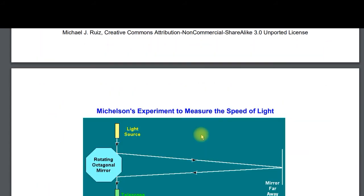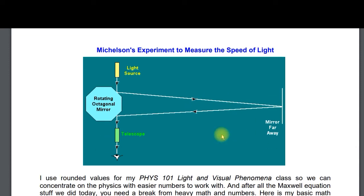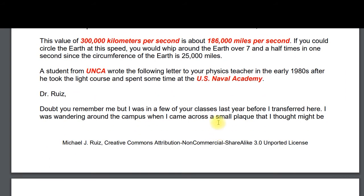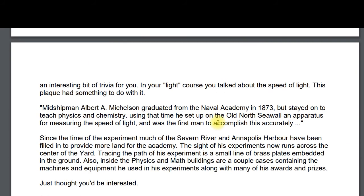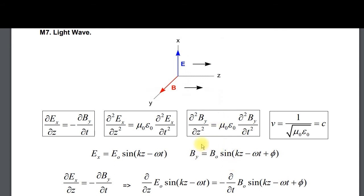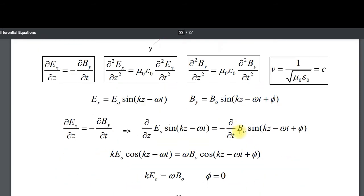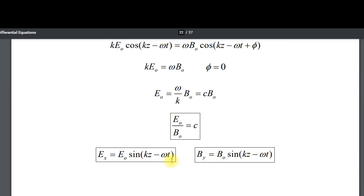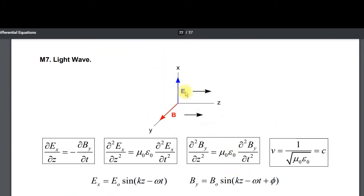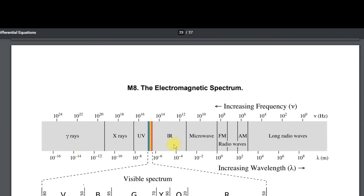For measuring the speed of light: just know generally and historically it involved a rotating eight-sided mirror and another mirror miles away. Know the speed of light is 300,000 kilometers per second. The E and B fields are perpendicular to each other — that's a transverse wave. You should be able to write down those two equations. For the EM spectrum: from left to right, increasing wavelength — gamma rays, x-rays, UV, visible, infrared, microwave, and radio.